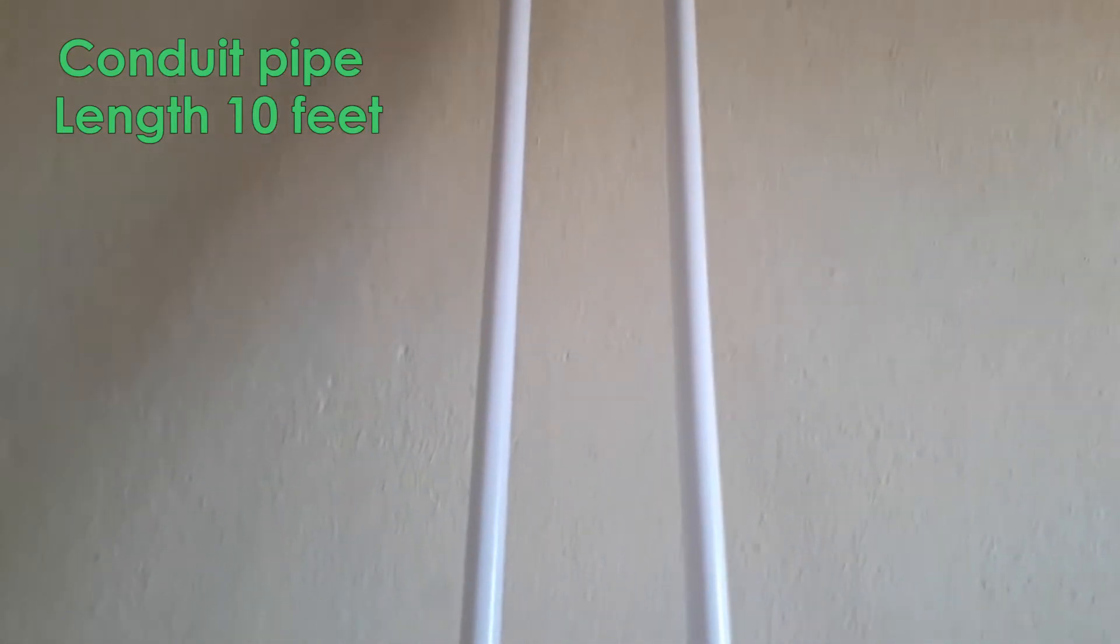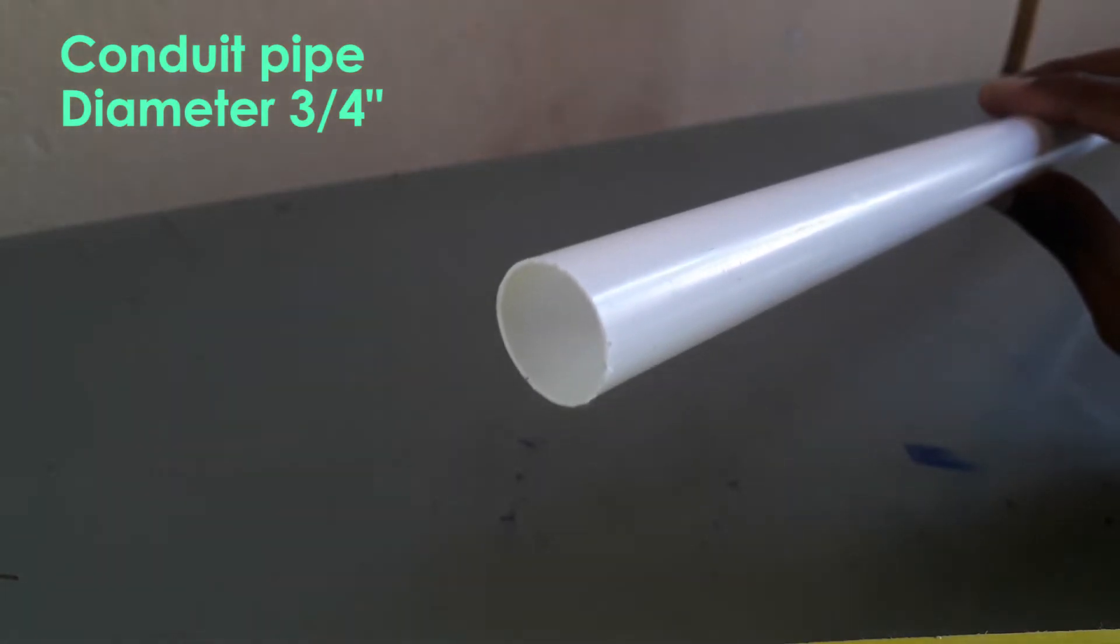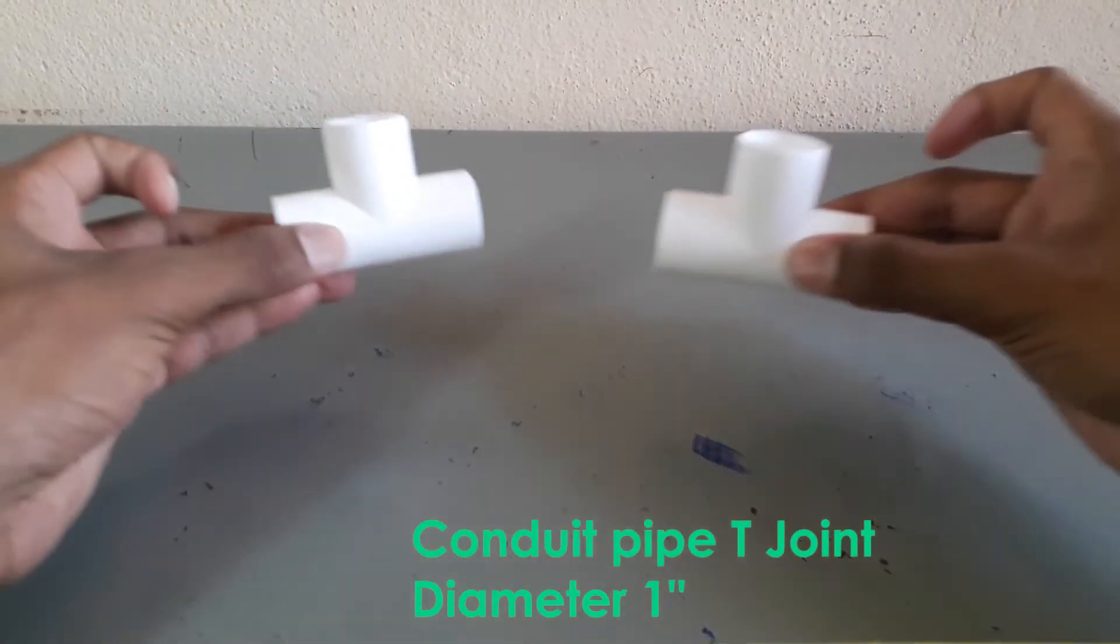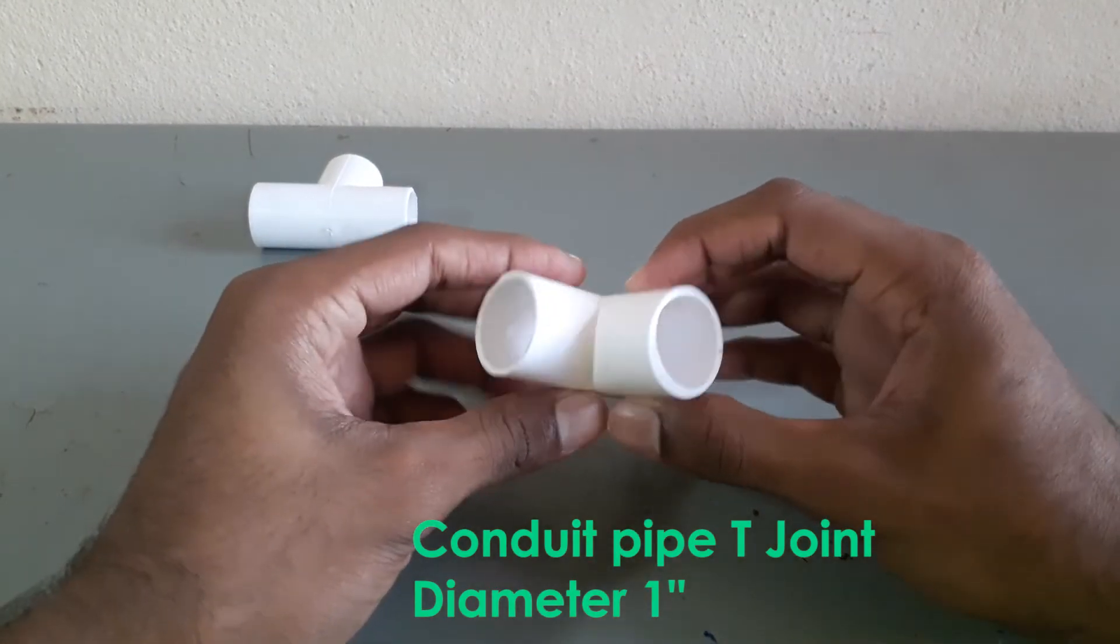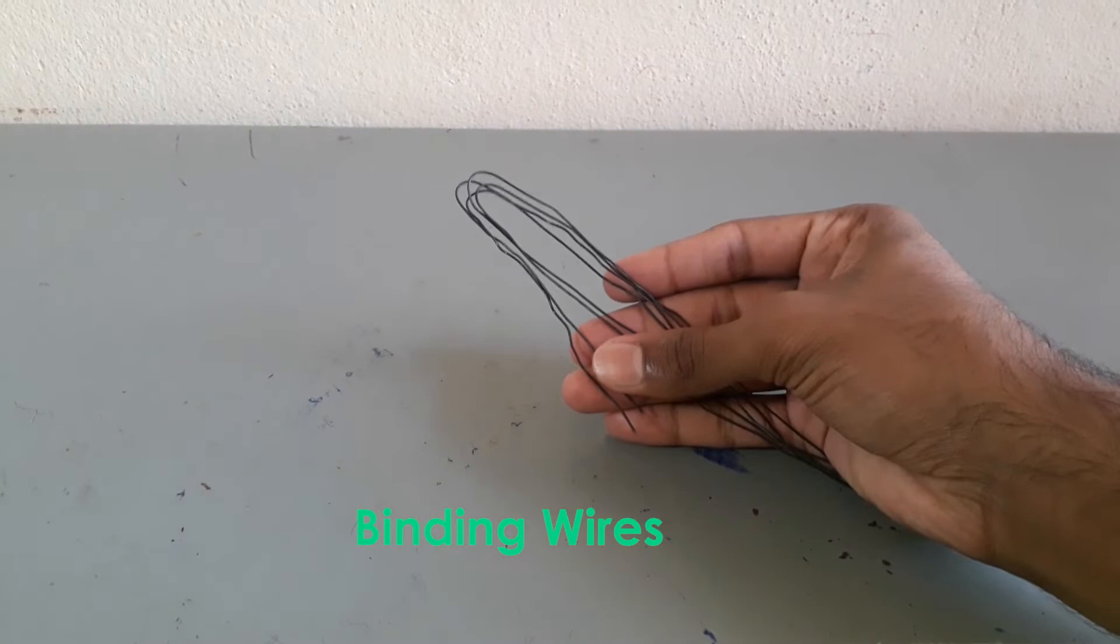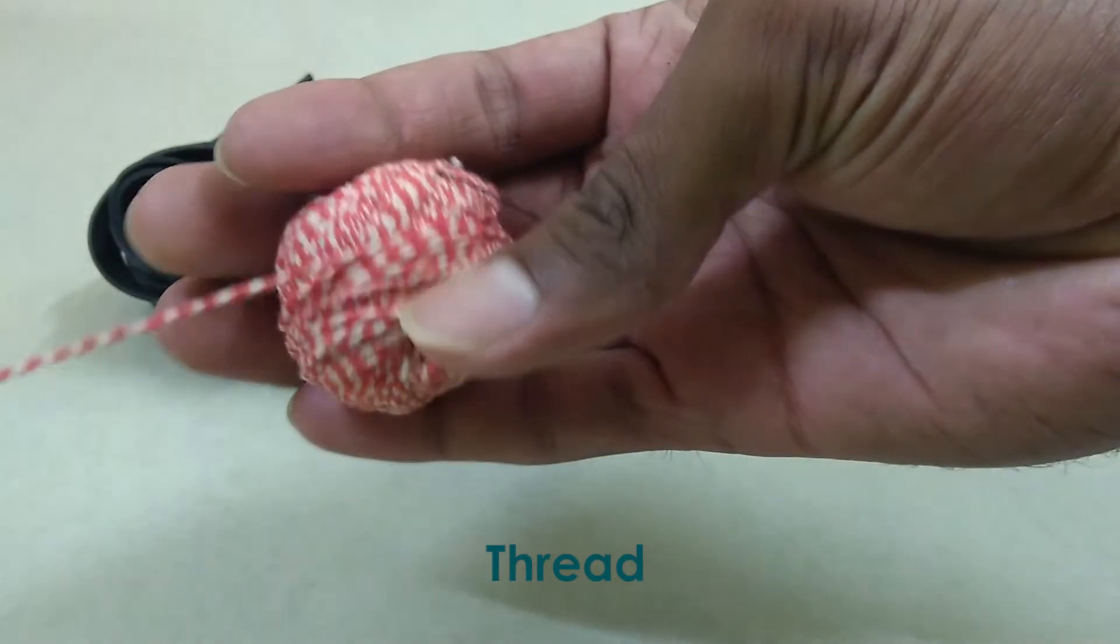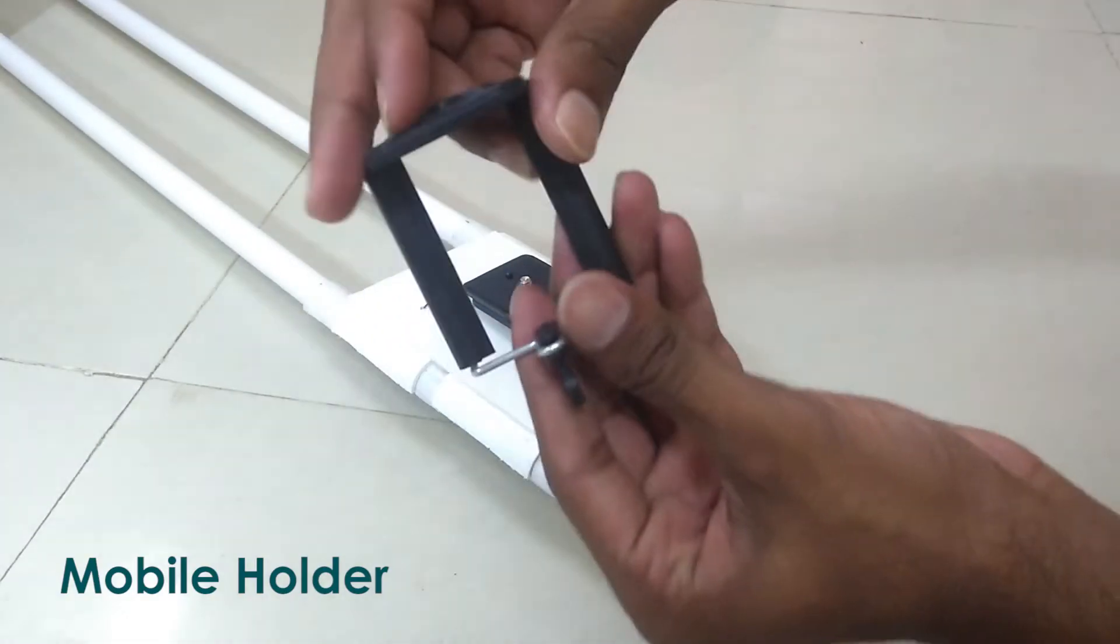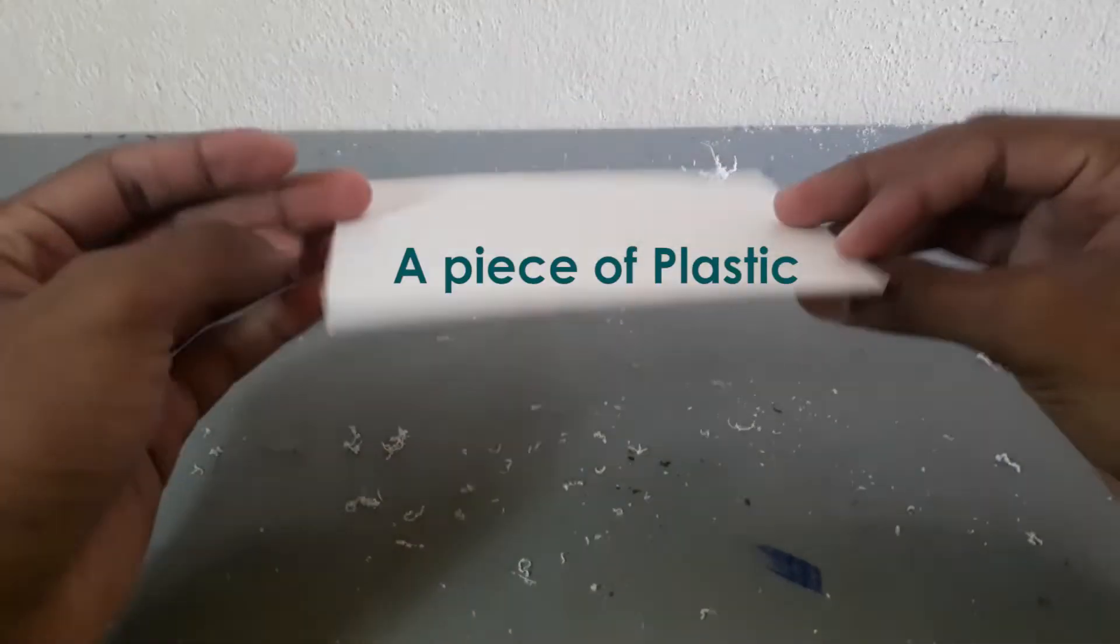Also you need 10 meters long conduit pipe of diameter 0.75 inches, 20 centimeters long conduit pipe of diameter 1 inch, 2 conduit pipe T joints each of diameter 1 inch, a hacksaw blade, some binding wires, a lightweight strong thread of around 11 feet long, a mobile holder, and a piece of plastic.